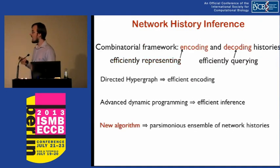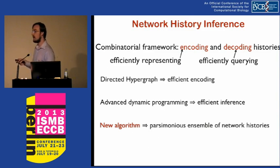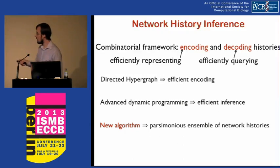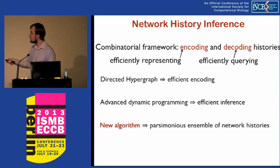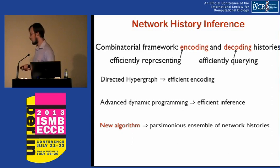I'm going to present a combinatorial framework meant to help with encoding and decoding histories. By encoding histories, I mean efficiently representing a potential space of network histories. By decoding histories, I mean efficiently querying this ensemble of represented histories to answer particular questions. The encoding I'll use is a directed hypergraph. We have advanced dynamic programming algorithms for efficient inference over this structure, and a novel algorithm giving us an ensemble of parsimonious network histories.